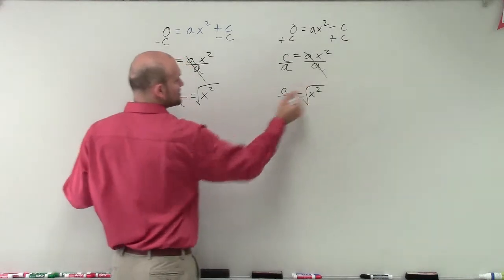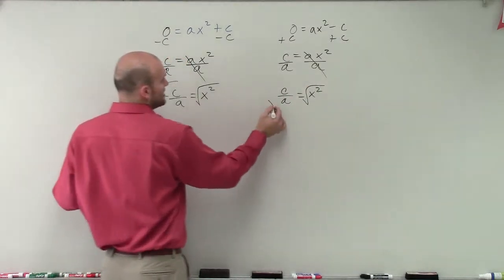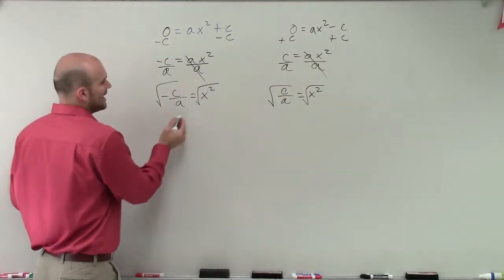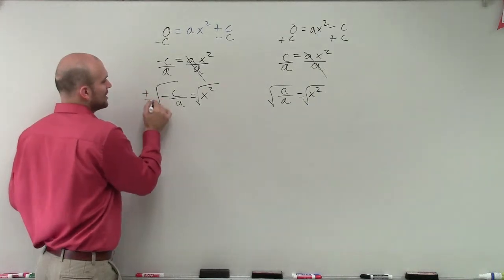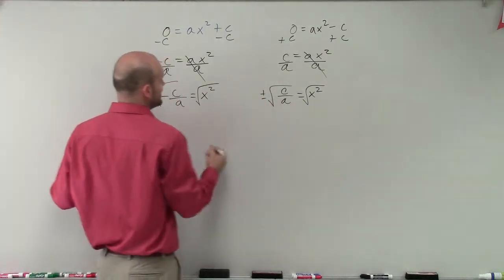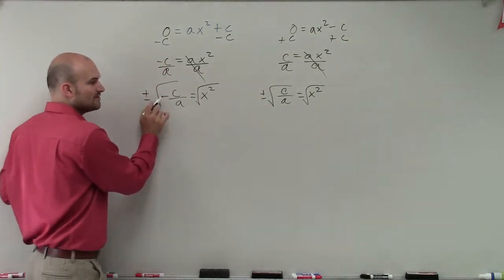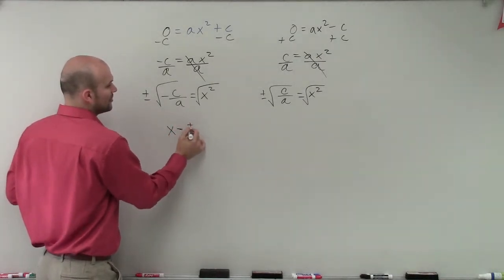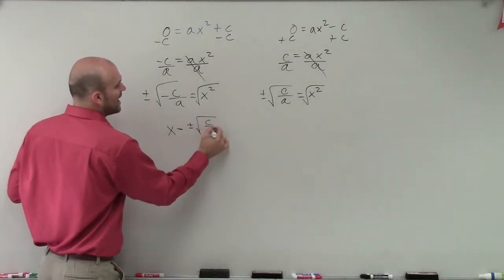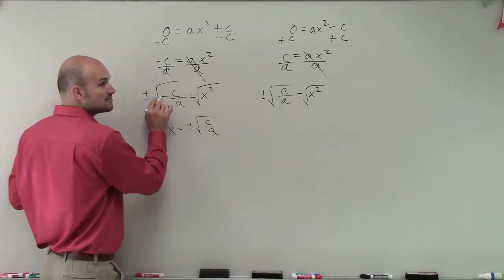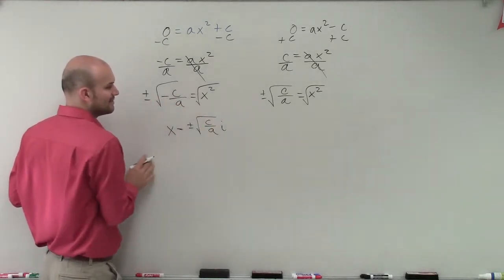We're solved for x squared. So therefore, I'm going to need to take the square root of x squared to isolate it. And when taking the square root, I need to make sure I include plus or minus. So in this case, I'm taking the square root of a negative number. So it's going to be x equals plus or minus the square root of positive c over a.